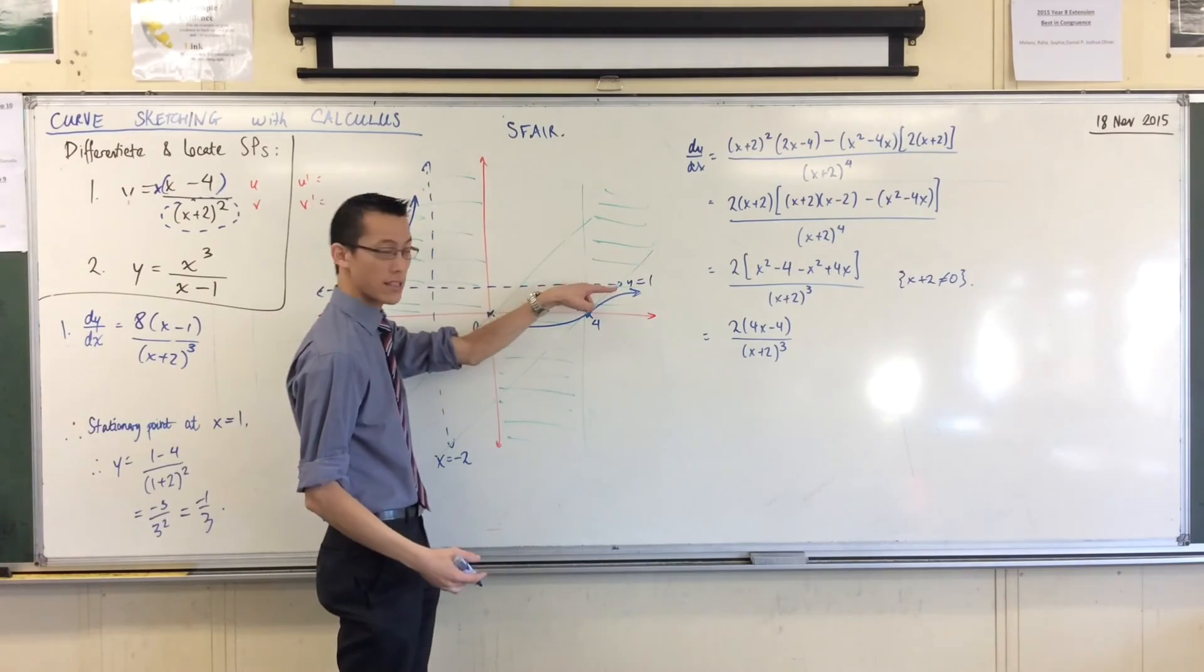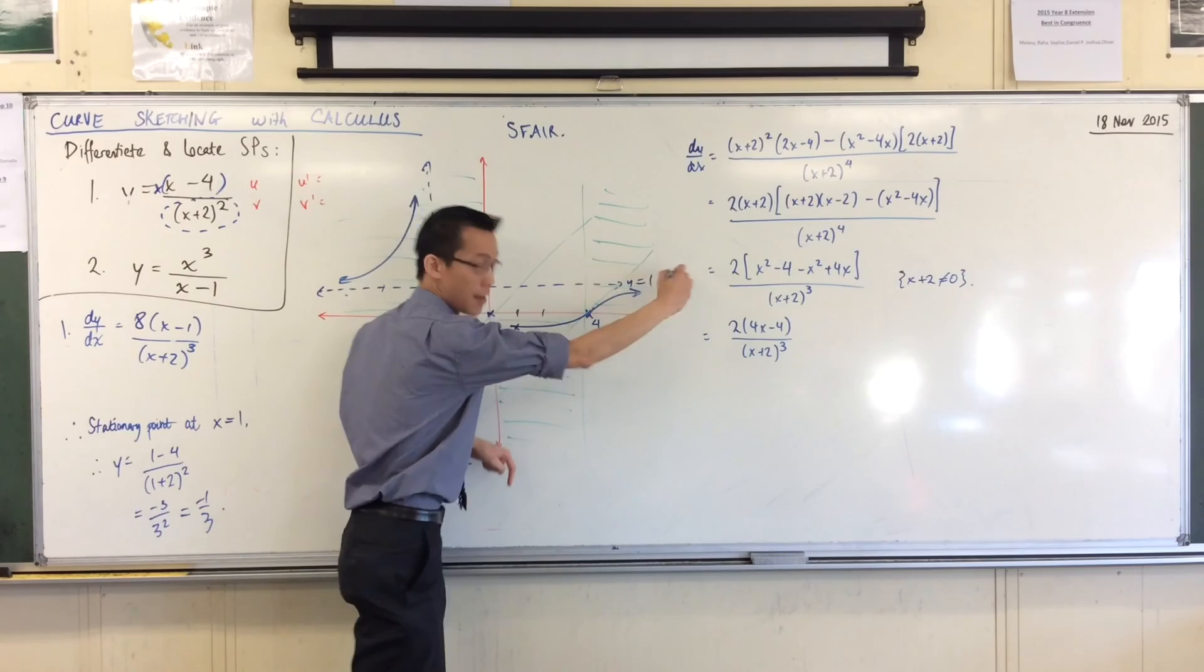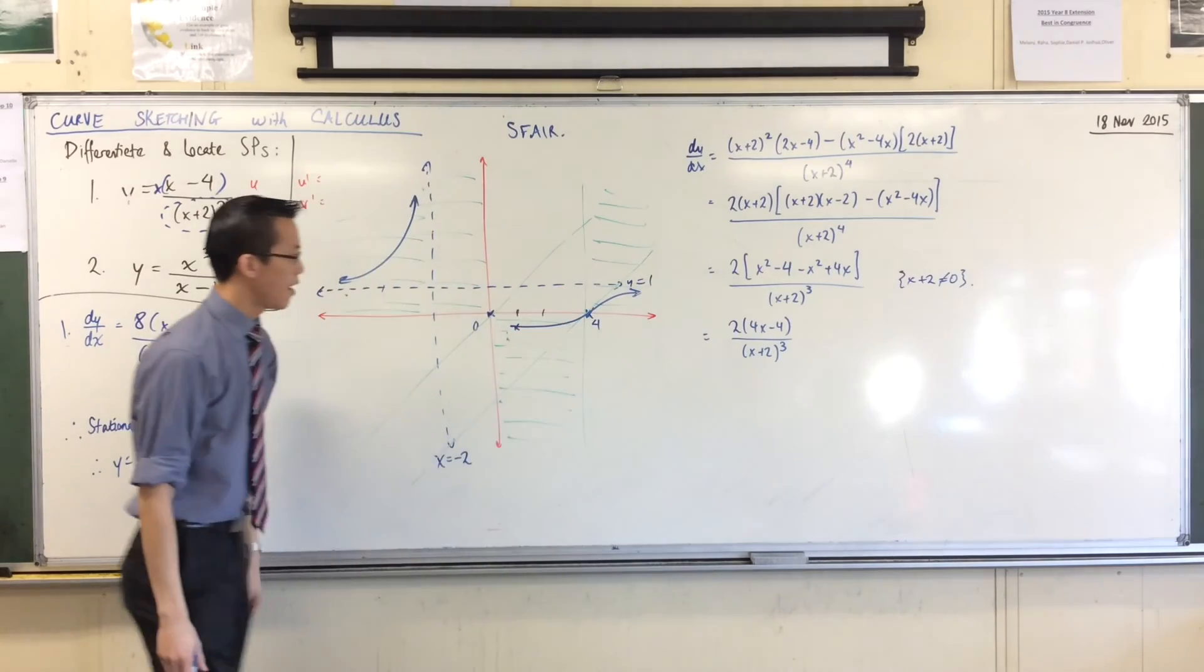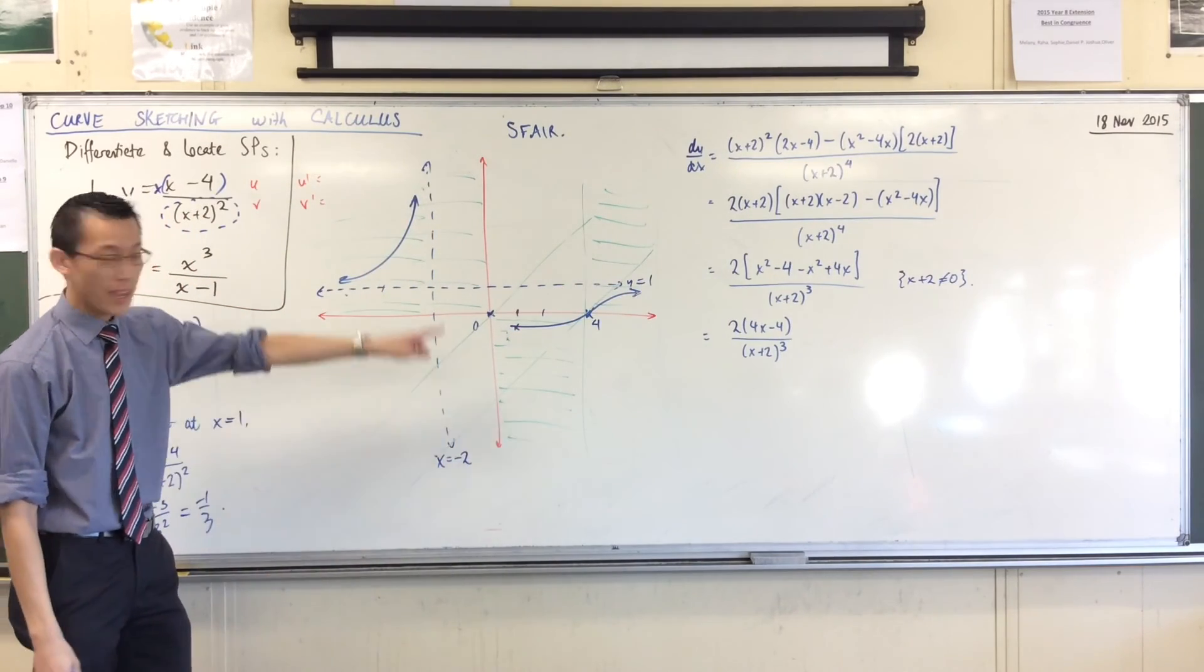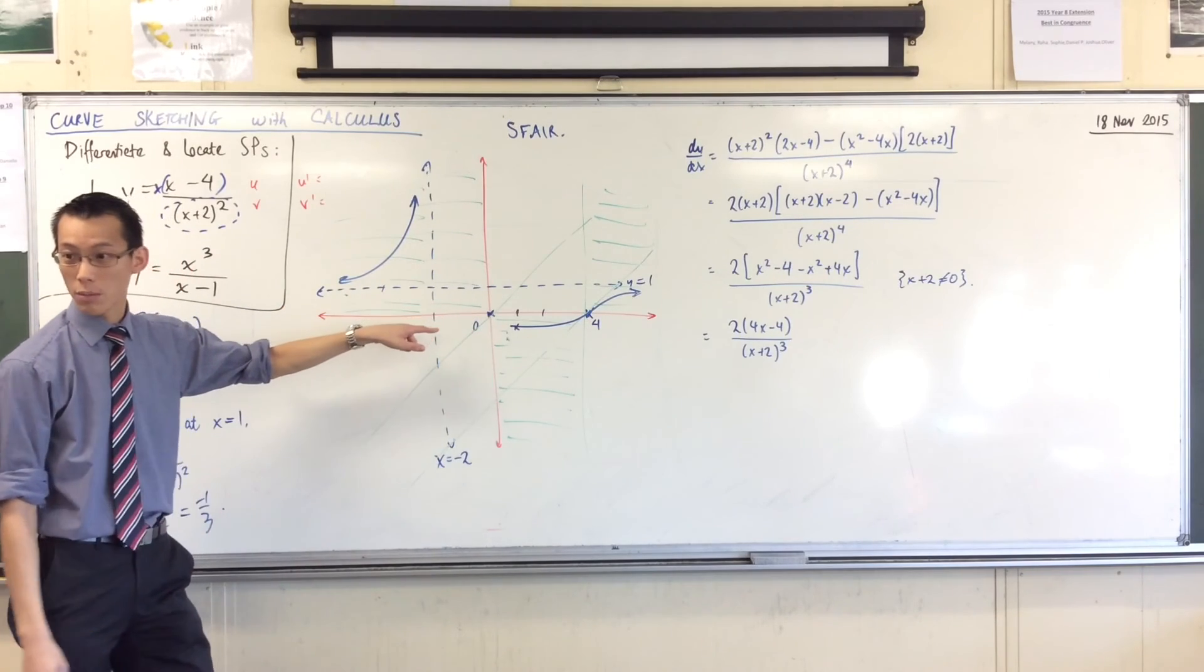What else can it do? It can't approach the asymptote from the top because, again, that would need another turning point, okay?